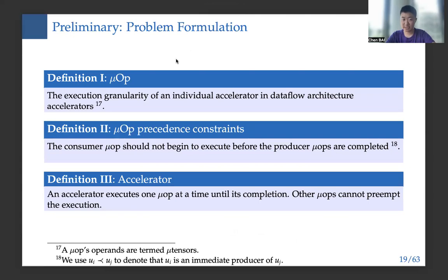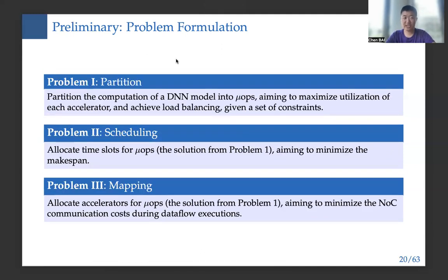We gave the problem formulation formally. A μOP refers to the execution granularity of an individual accelerator in dataflow architecture accelerators. The μOP precedence constraint states that a consumer μOP should not begin to execute before its producer μOPs are completed. An accelerator executes one μOP at a time until completion; other μOPs cannot preempt the execution. Three problems are defined: partition maximizes utilization of each accelerator with load balance; scheduling allocates time slots for μOPs to minimize makespan; and mapping allocates accelerators to μOPs to minimize network-on-chip communication cost.